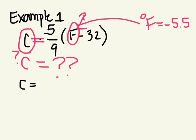So C equals 5 divided by 9 bracket F. What do I replace F with? Negative 5.5. Negative 5.5 minus 32. Okay?